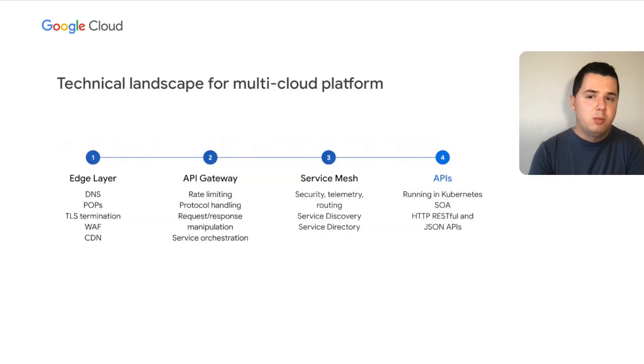When we approached the migration to the cloud using API Gateway, we also laid out a technical landscape for success. This meant splitting our cloud platform into four layers: an edge layer, API Gateway layer, service mesh, and APIs. The edge layer meant having proper DNS, points of presence, and CDN accepting traffic for our users.